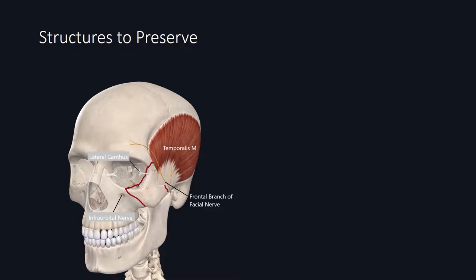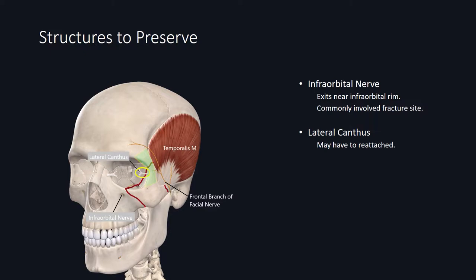Relevant anatomy to note: the infraorbital nerve is commonly identified during subperiosteal dissection, and you can see the nerve exiting the infraorbital foramen as you approach the infraorbital rim. The fracture line will commonly involve the infraorbital foramen. The lateral canthus may be encountered during dissection of the lateral orbital rim and may need to be reattached if there is a sign of detachment. The frontal branch of the facial nerve travels posterior to the lateral orbital rim and may be encountered during the surgical approach. Tooth roots may also be encountered and are generally assumed to be twice the height of the crown.